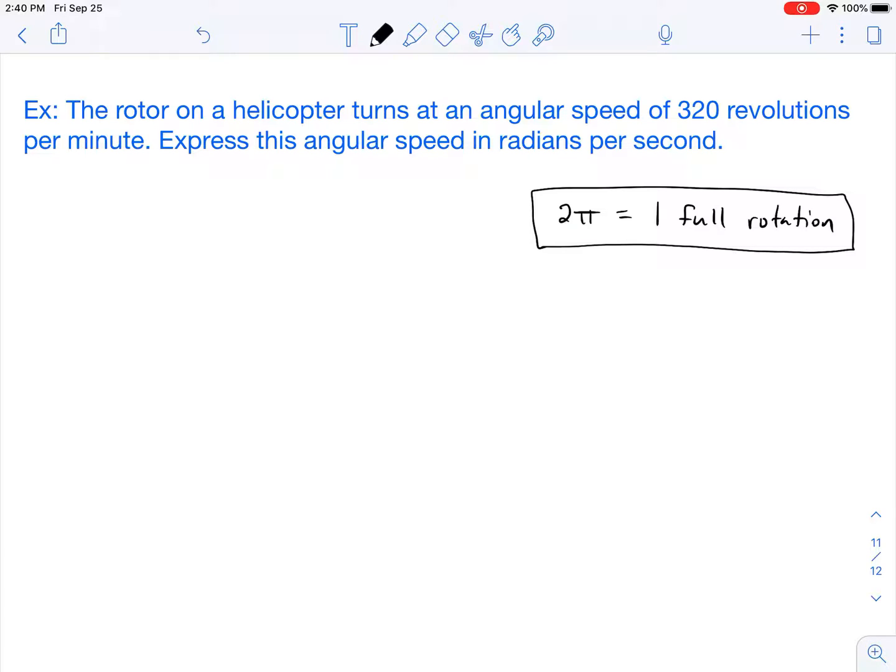Given that this is a conversion problem we need a conversion factor, and so the conversion factor for a revolution to a radian is that one full rotation is equal to 2π.